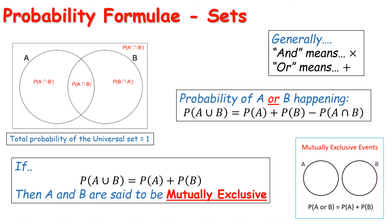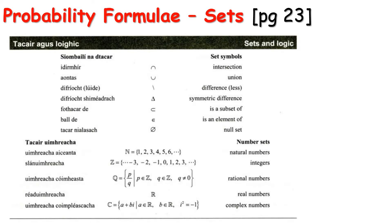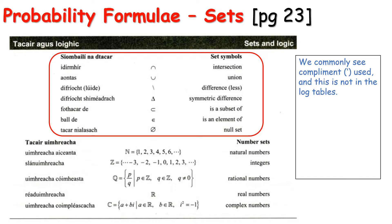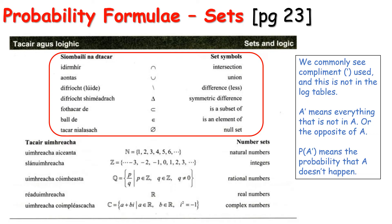Everything we need for sets notation is available in your log tables on page 23. Just note that they are short on this complement symbol — the little dash — which we see quite a lot, especially in mock questions. A complement means everything that's not in A, or the opposite of A. So the probability of A dash or A complement means the probability that A does not happen.